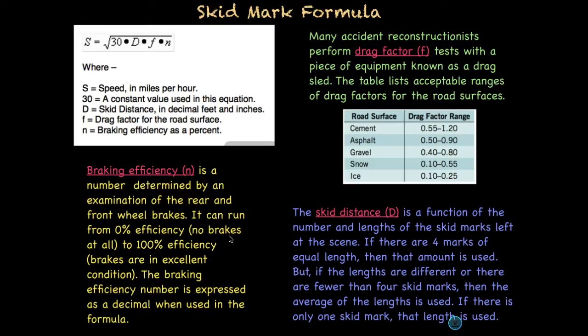Braking efficiency is a number determined by an examination of the rear and front wheel brakes. It can run from zero, if we don't have any brakes, we lose our brakes, to 100%. Brakes are in excellent condition. We always want to express our braking efficiency as a decimal. So if it's at 30%, we want to express it as 0.3, not 30.